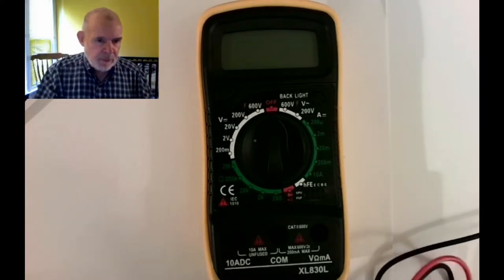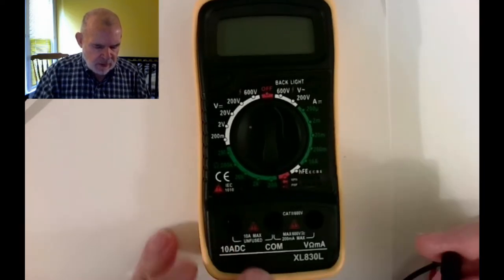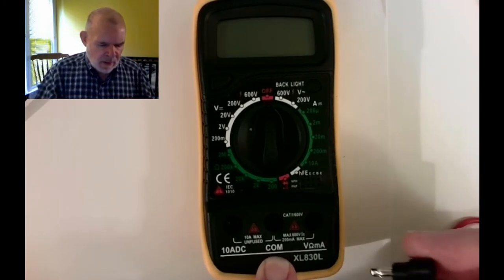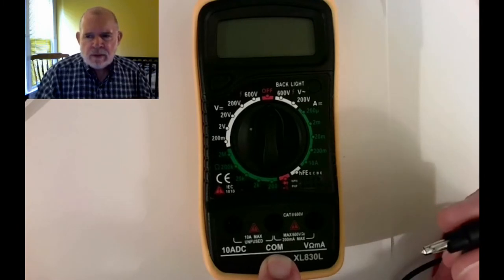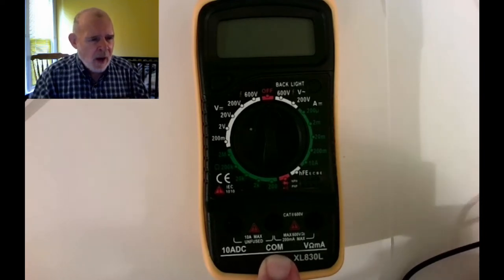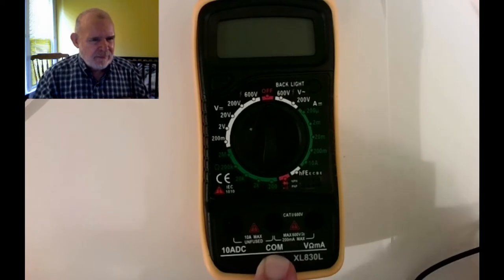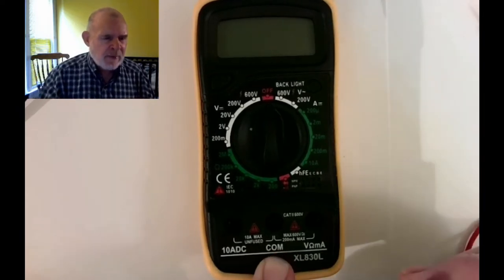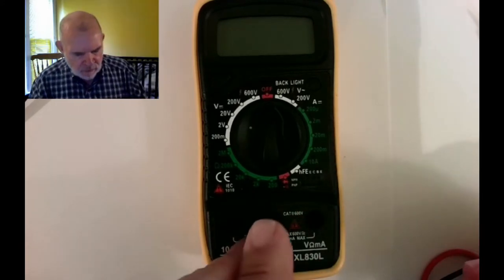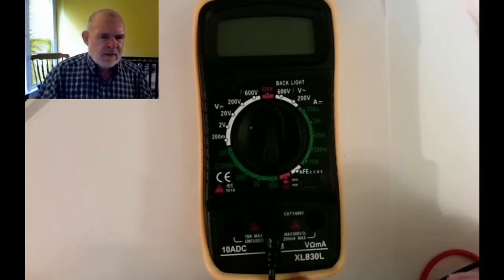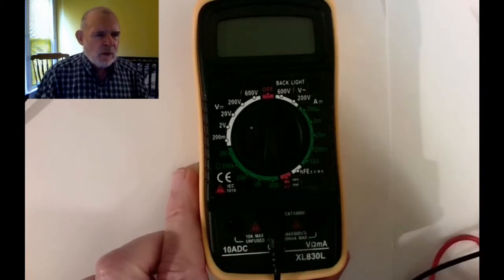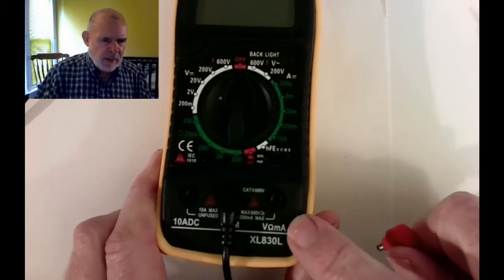So the first thing to do is connect up our test leads. The one in the middle here is called COM, that stands for common. Don't confuse that with your Arduino COM port - there COM stands for communication, where here it stands for common or ground, or it's the thing that's in common to all the readings we're going to take. So I'll insert the black test lead in there. Now the red one, there's two possible places it can go.